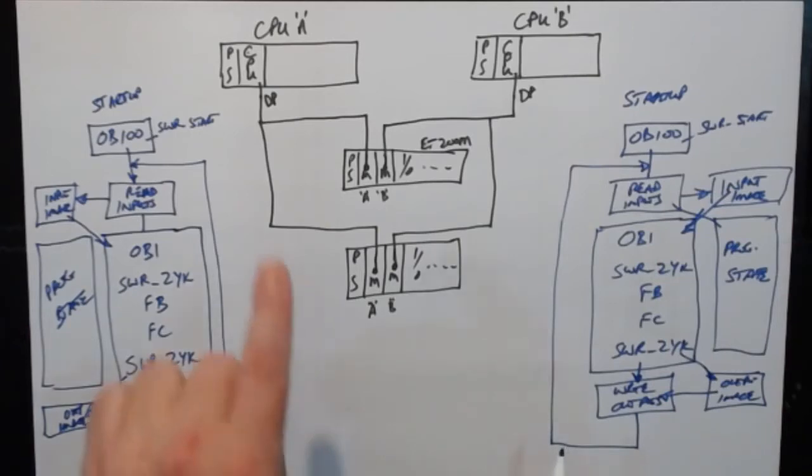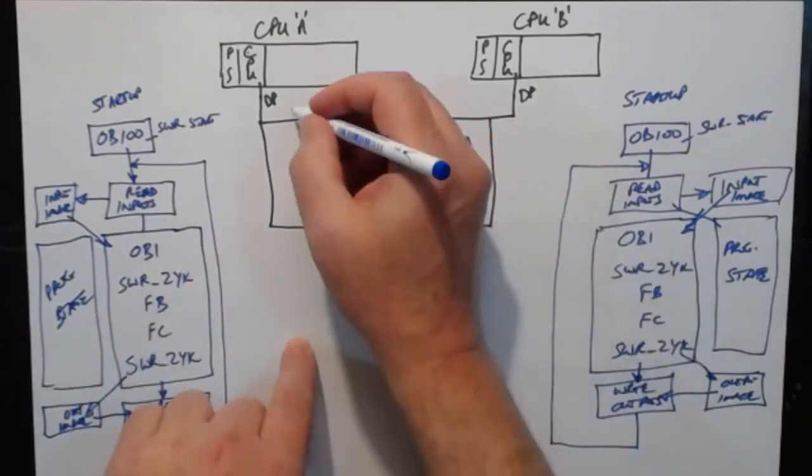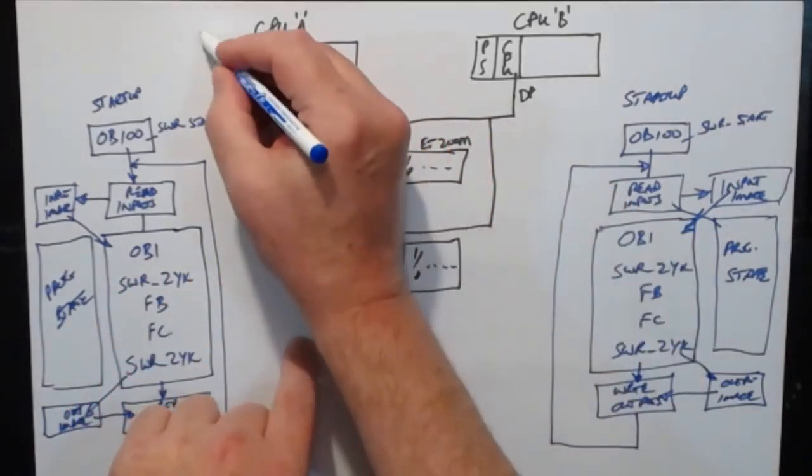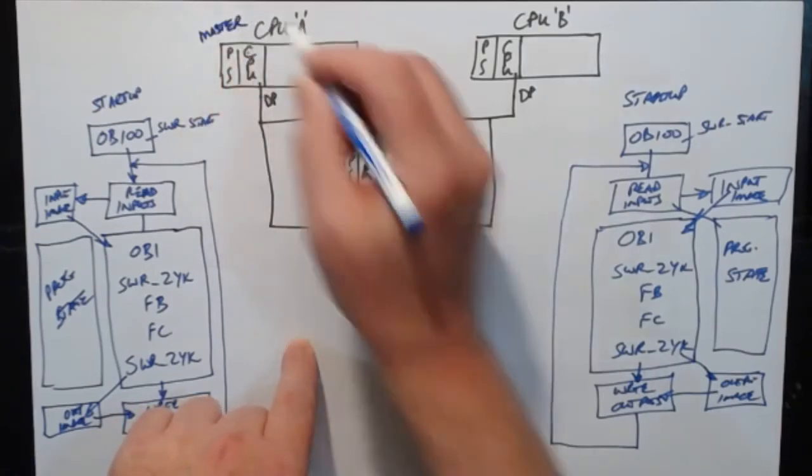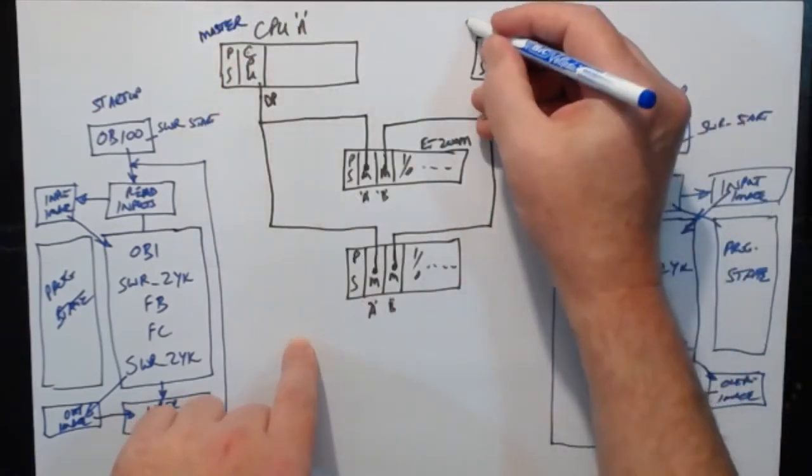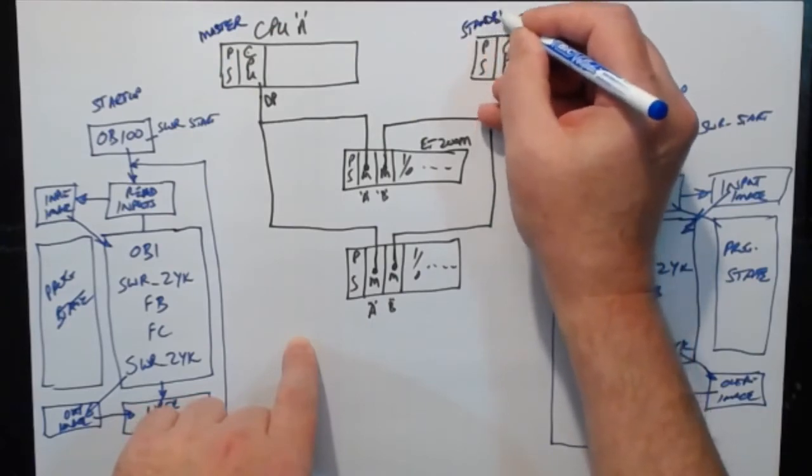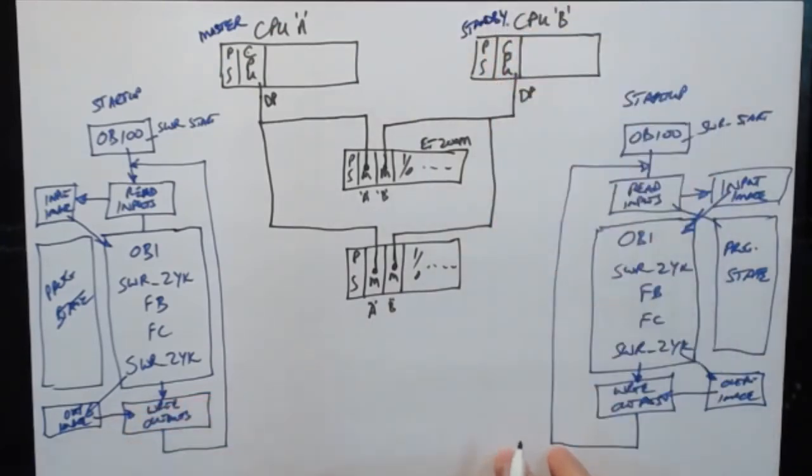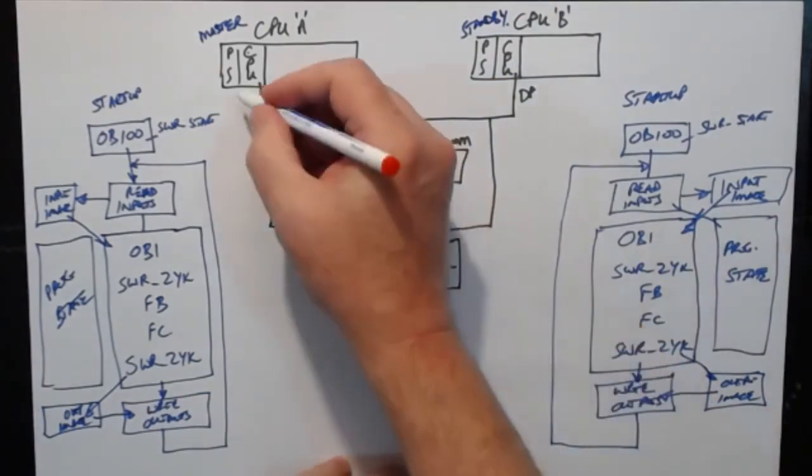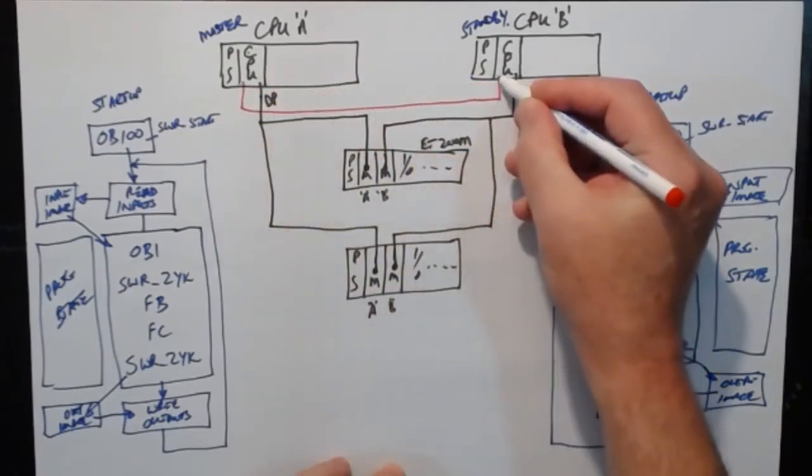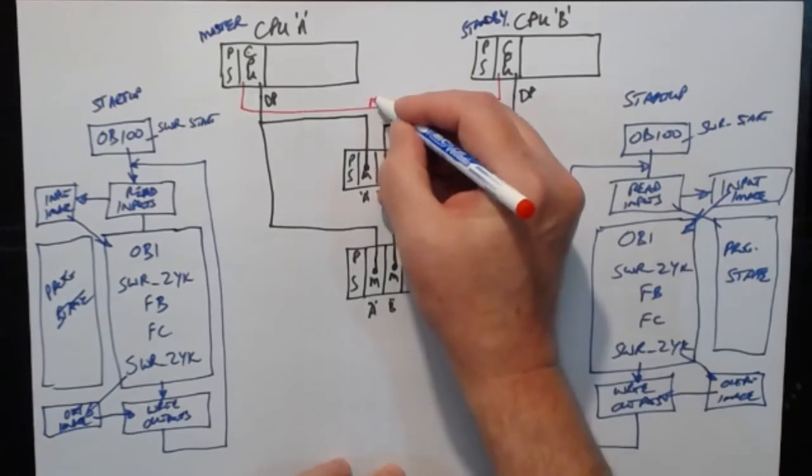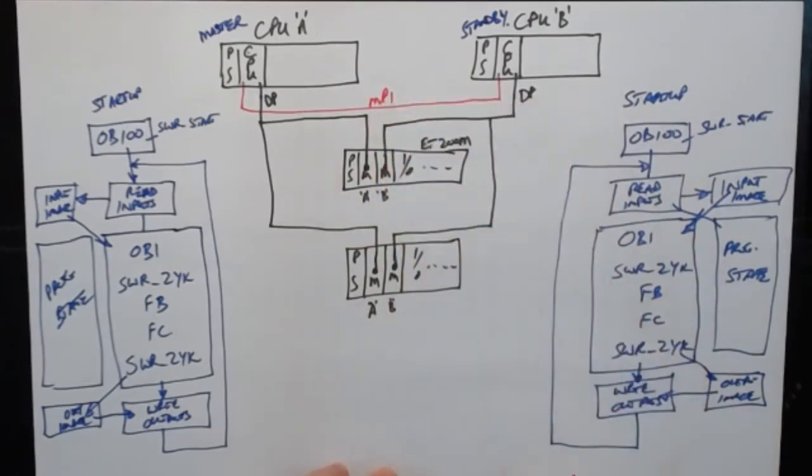But let's assume that CPU A is the master, so it's in control of the software redundancy. And CPU B is the standby. These two PLCs talk to each other. They talk to each other over a separate channel. The simplest version is over MPI. So over MPI they talk to each other.